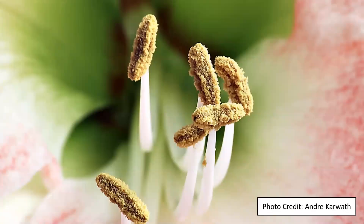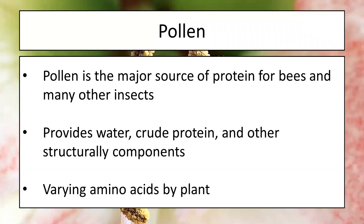Bees are going after pollen primarily — it's the primary source of protein for bees and many other insects. There are a ton of different amino acids they can get from pollen, though this varies strongly by plant species. Not all plants provide an equal amount of different amino acids. However, pollen always provides water, crude protein, and other structural components vital to bee health — keeping their bodies built and organs functioning. Normally bees know which plants will provide them plenty of food, so we just need to make sure those plants are available.